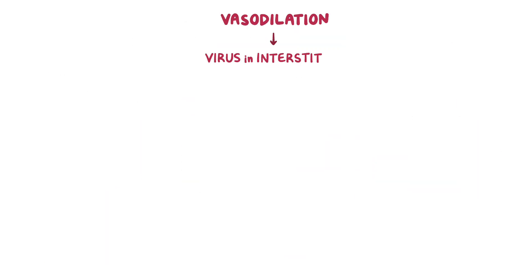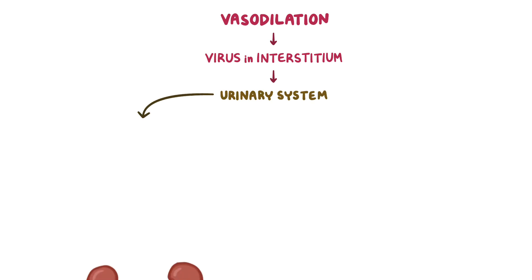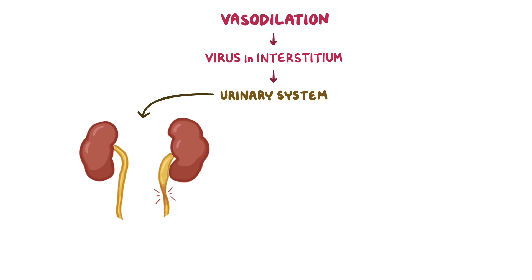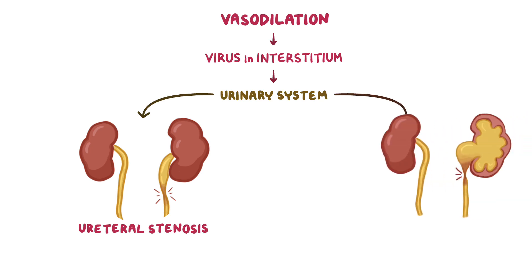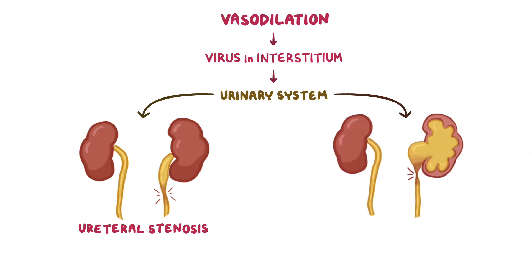Because of vasodilation, virus in the interstitium can slide into the capillaries lining the tubules and travel through the blood to reach different parts of the urinary system. If the virus enters the ureteral epithelial cells, it causes inflammation, which over time results in fibrosis and narrowing of the ureter walls, called ureteral stenosis. If the ureters are completely blocked, it results in hydronephrosis, which is the distension of the renal calyces and pelvis with urine.